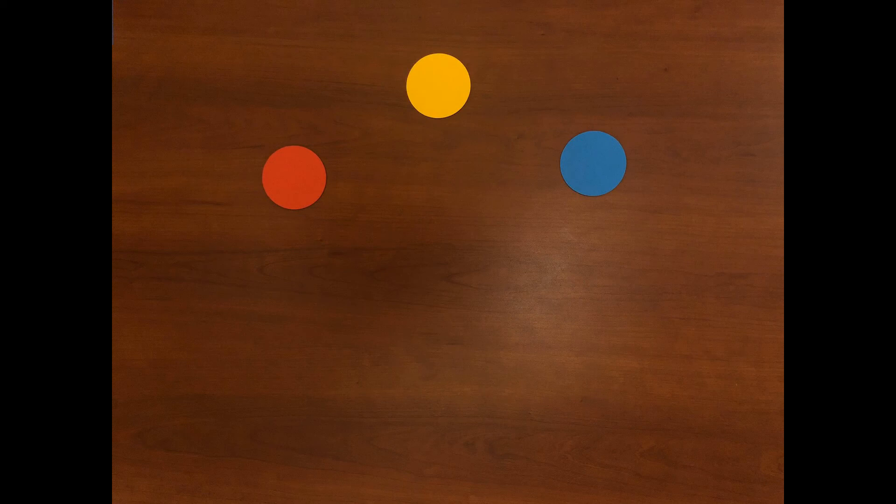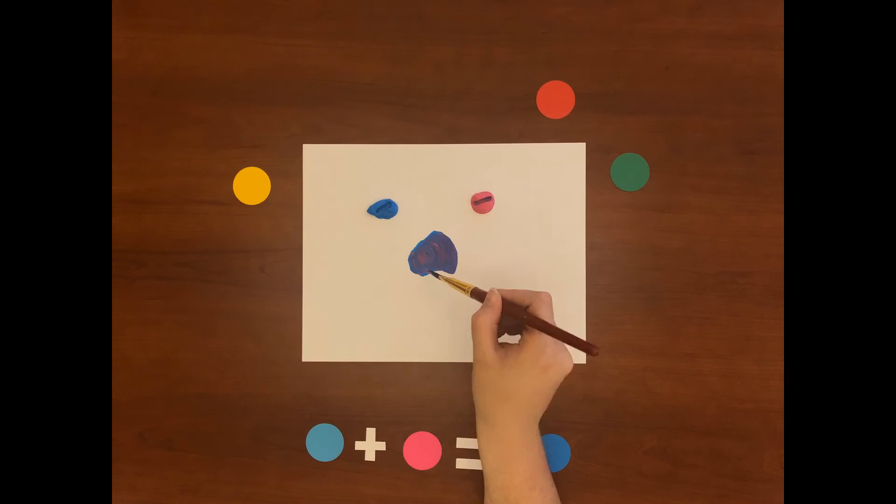Here's an example. If you mix cyan and magenta you can make blue. This shows that blue can be made by mixing colors and by definition cannot be primary.